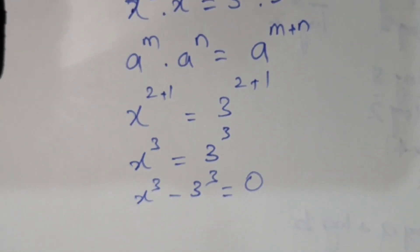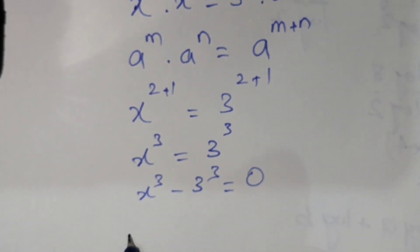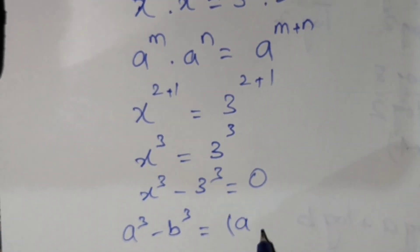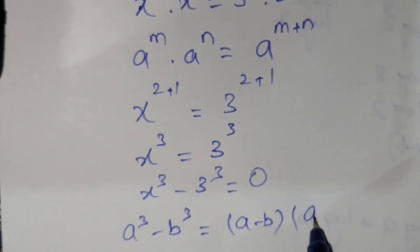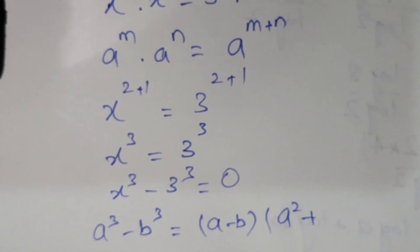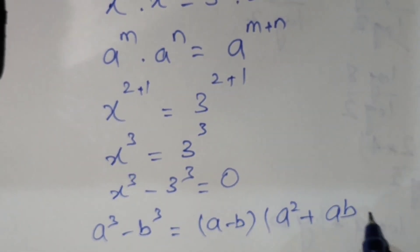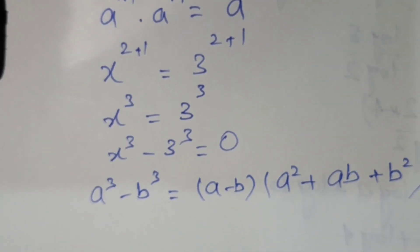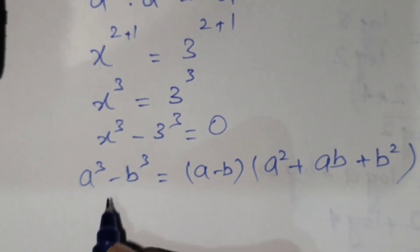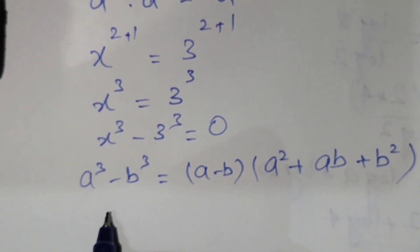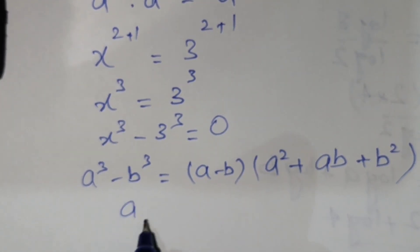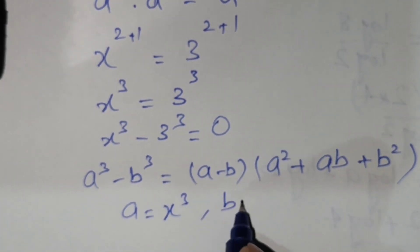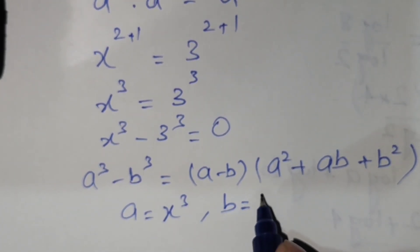As we know, the formula for a cubed minus b cubed equals (a minus b)(a squared plus ab plus b squared). We will use this formula here, where a is x and b is 3.